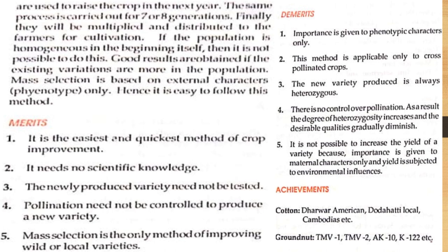These seeds are used to raise the crop in the next generation. The same process is carried out for seven to eight generations, after which they are multiplied and distributed to farmers for cultivation. If the population is homozygous from the beginning, it is not possible to do this. Good results are obtained if the existing variation in the population is more. Mass selection is based on external characters only, making it easy to follow. It is the easiest and quickest method of crop improvement, requires no scientific knowledge, and the newly produced variety need not be tested.